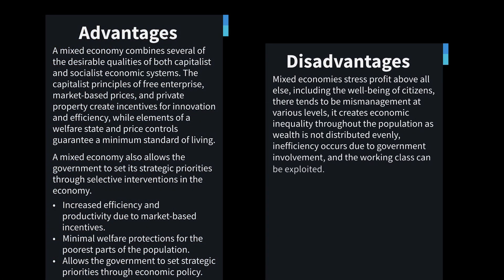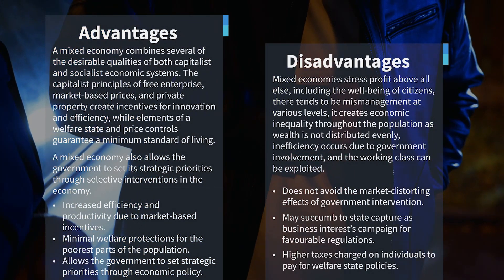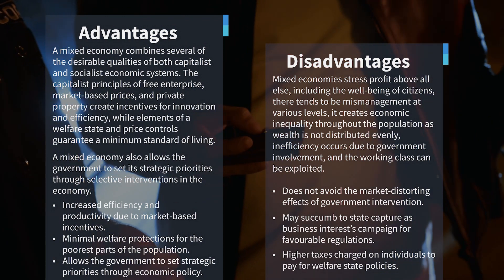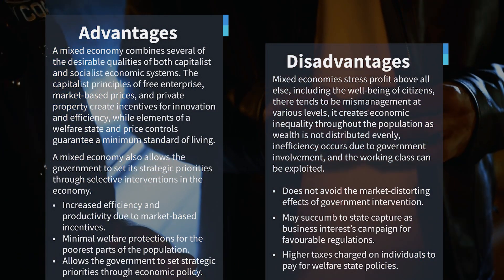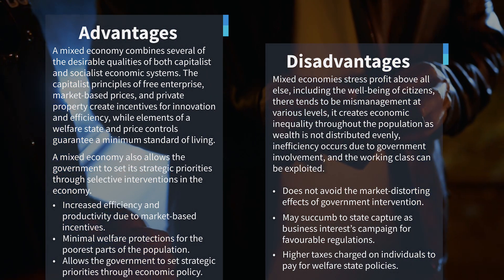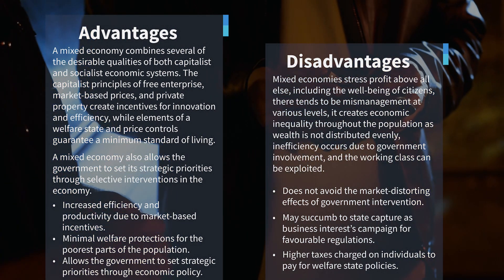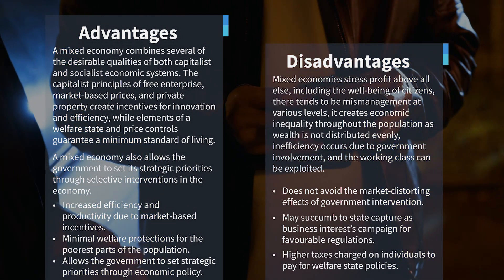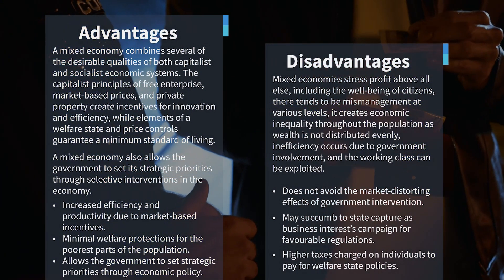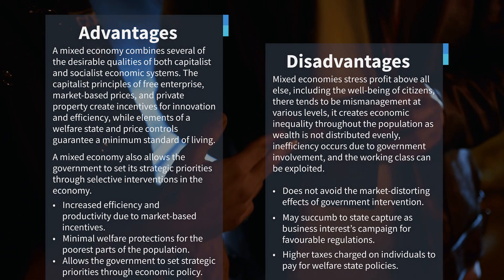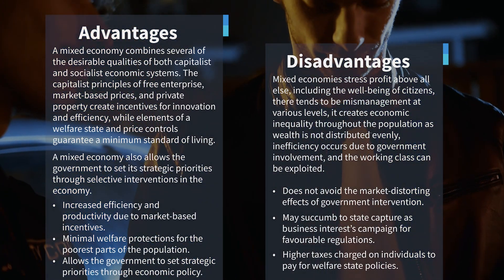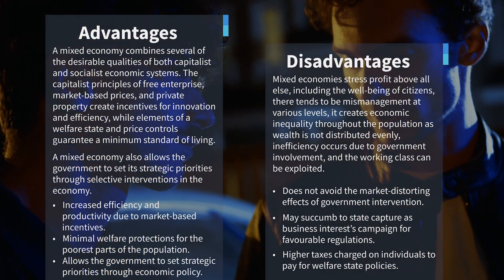Disadvantages: Big businesses can lobby government for more regulation, and once this happens the system can create a situation with businesses which are too big to fail. This can create the same environment that created the 2008 financial crisis, which started in America. Central planning for certain industries can create problems where industries which are government-subsidized will slow down the country's economic growth. In this regard, the state-owned entities in South Africa have through inefficiencies and bailouts slowed down the South African economy.